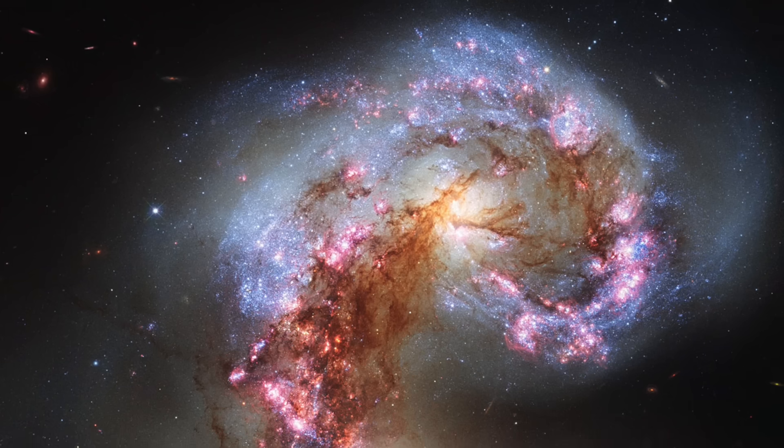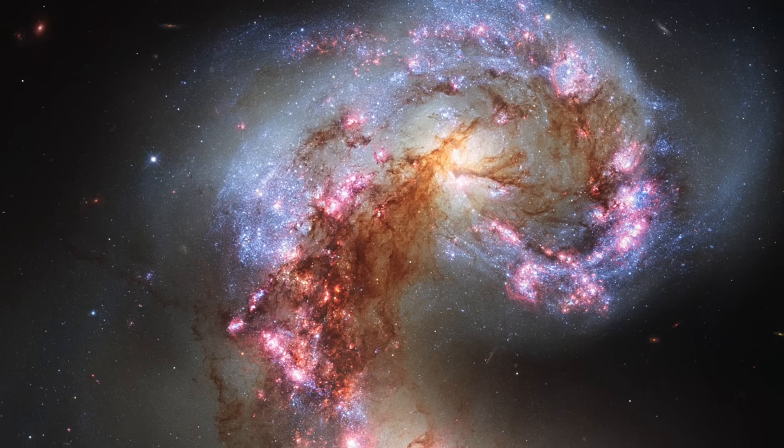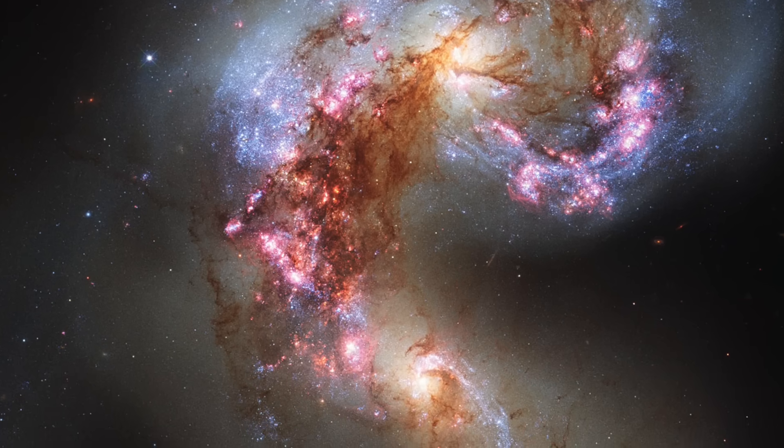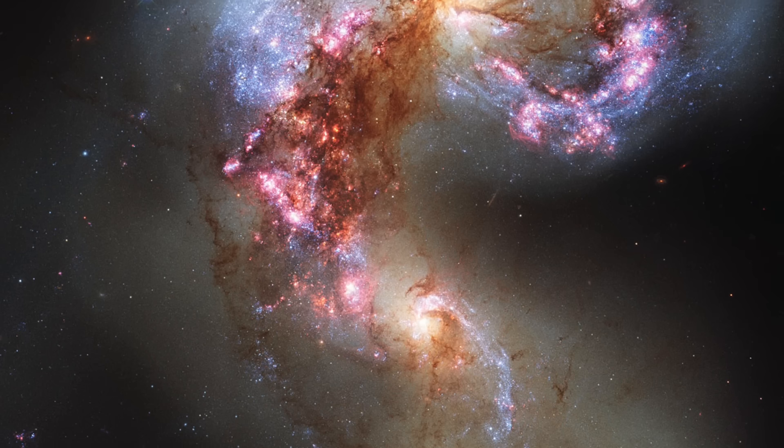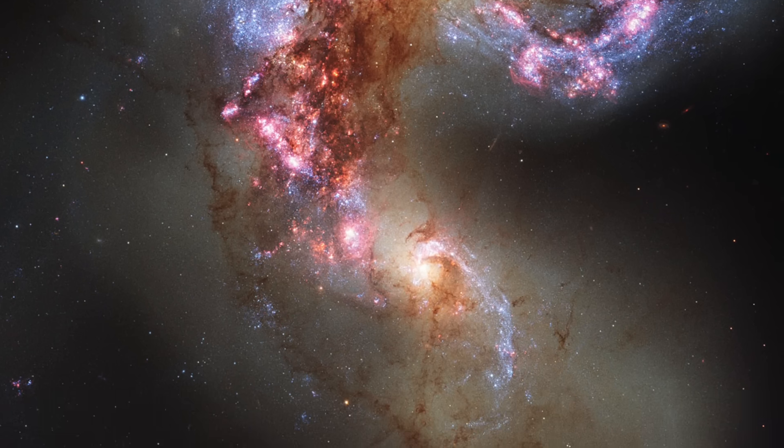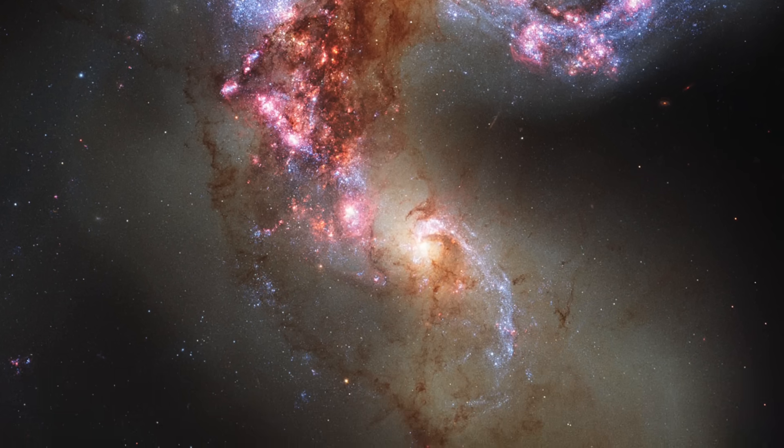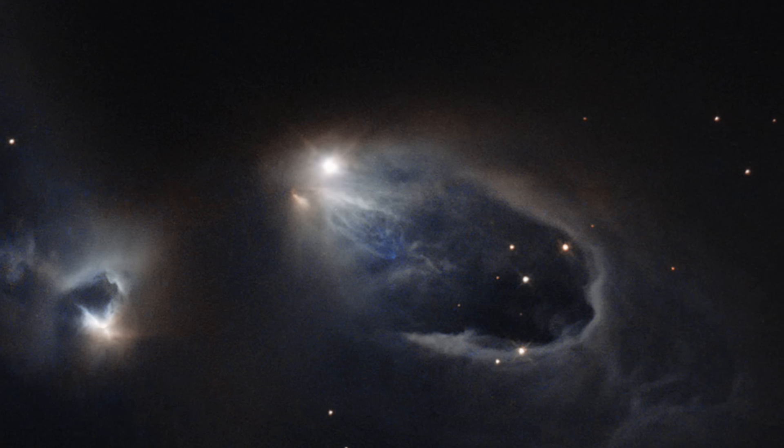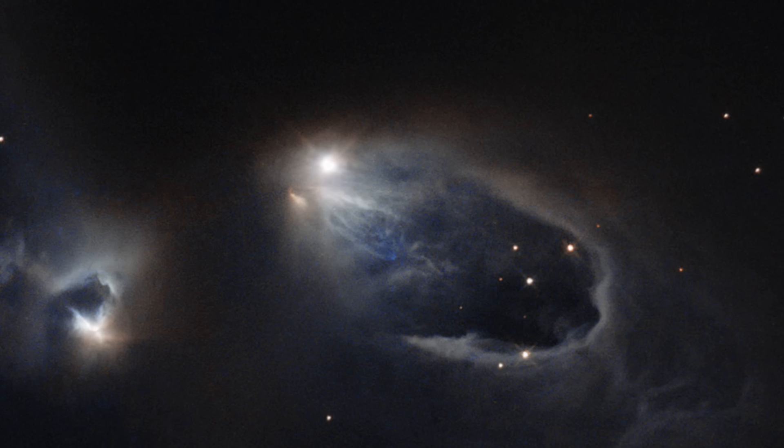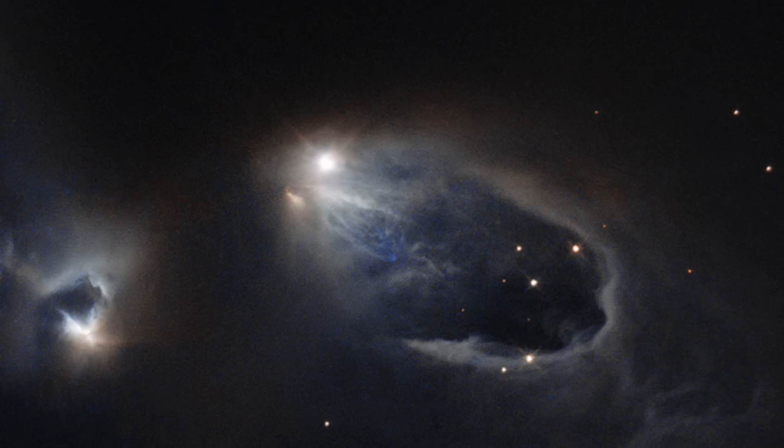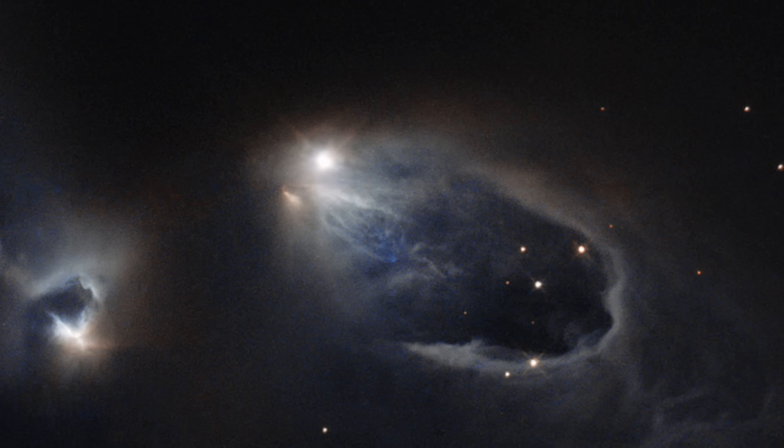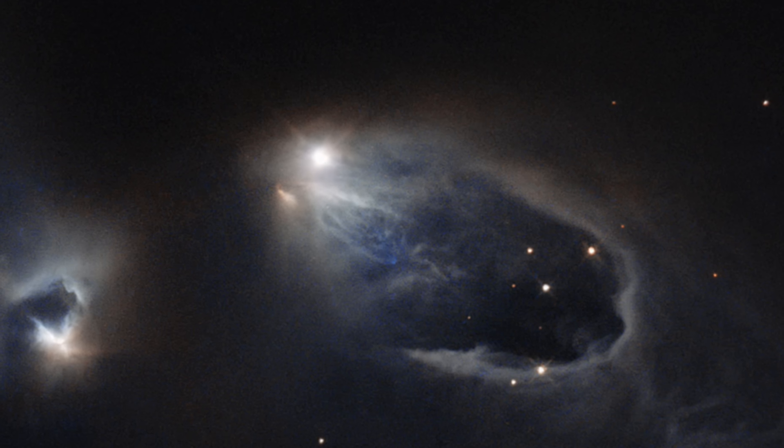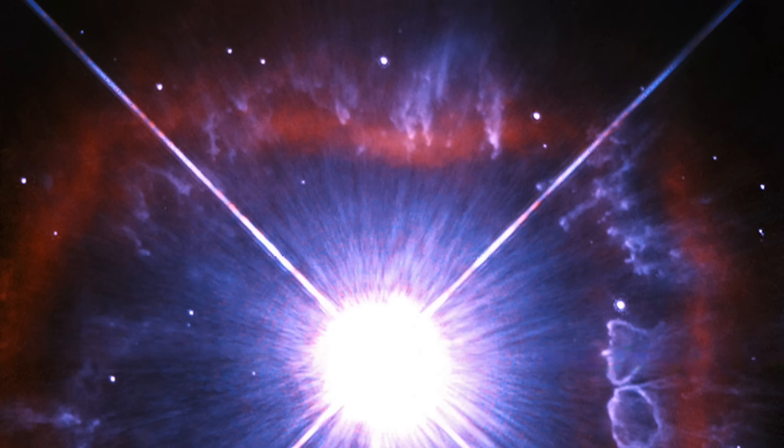But here is the kicker. If dark energy weakens over time, welcome back to a very old hypothesis about the end of the universe that had fallen off the table: the big crunch. If dark energy is weakening, there comes a point where the expansion of the universe starts to slow, stops, and then potentially reverses. The universe then collapses in on itself, until once again, it becomes a singularity. That could mean that another big bang event is set up, and we actually live in the current iteration of a cyclic universe that expands, contracts, explodes, expands, and so on.